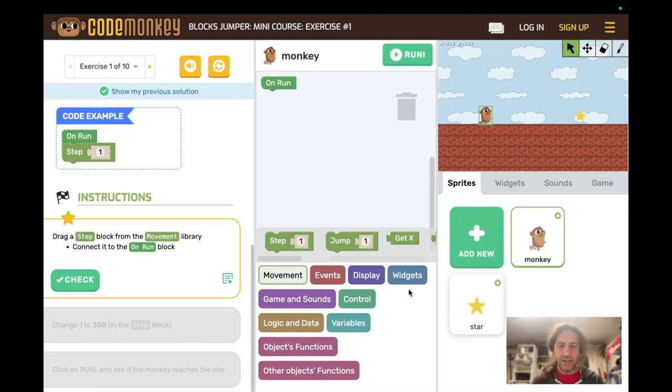Down here we have the libraries. These are the block libraries. Right now we have the movement library up with the movement blocks. They're color-coded and you do have to scroll over a lot in order to see all of them.